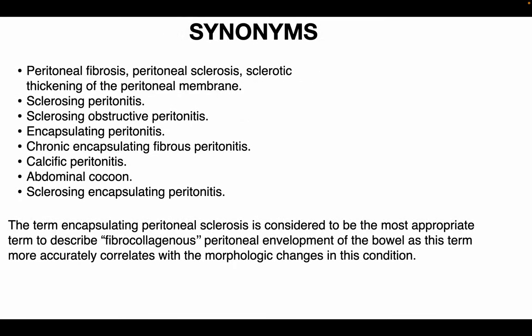Various other terms used for this condition include peritoneal fibrosis, peritoneal sclerosis, sclerotic thickening of the peritoneal membrane, sclerosing peritonitis, sclerosing obstructive peritonitis, encapsulating peritonitis, chronic encapsulating fibrous peritonitis, calcific peritonitis, abdominal cocoon, and sclerosing encapsulating peritonitis. The term encapsulating peritoneal sclerosis is considered the most appropriate term, as it more accurately correlates with the morphological changes in this condition.